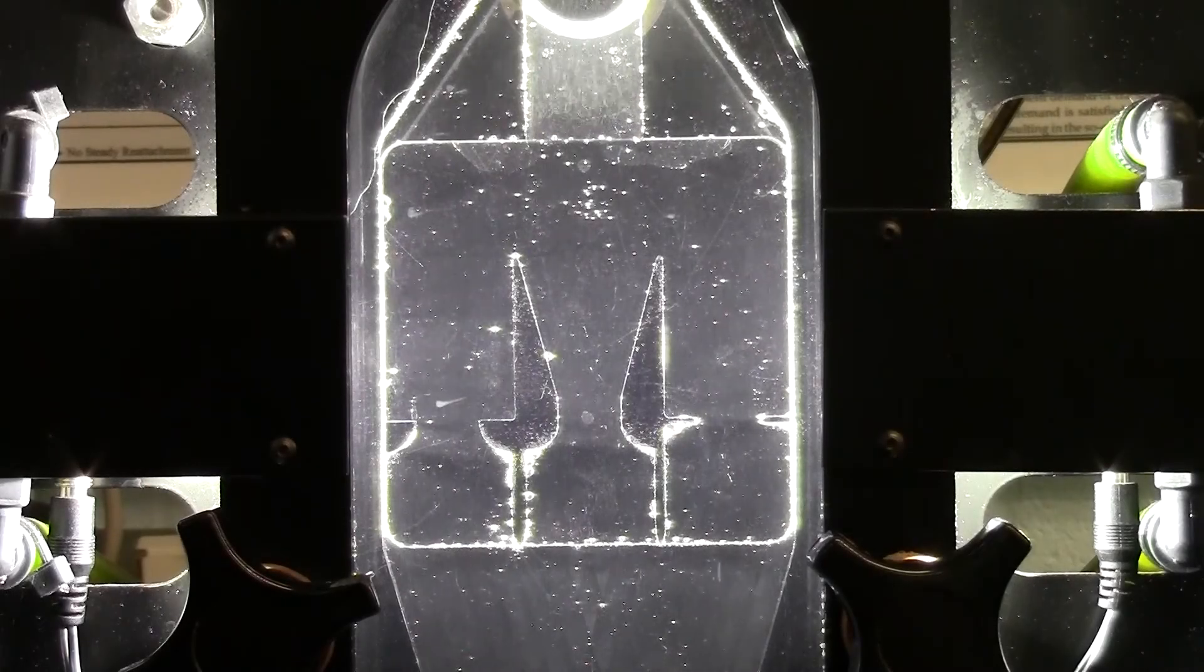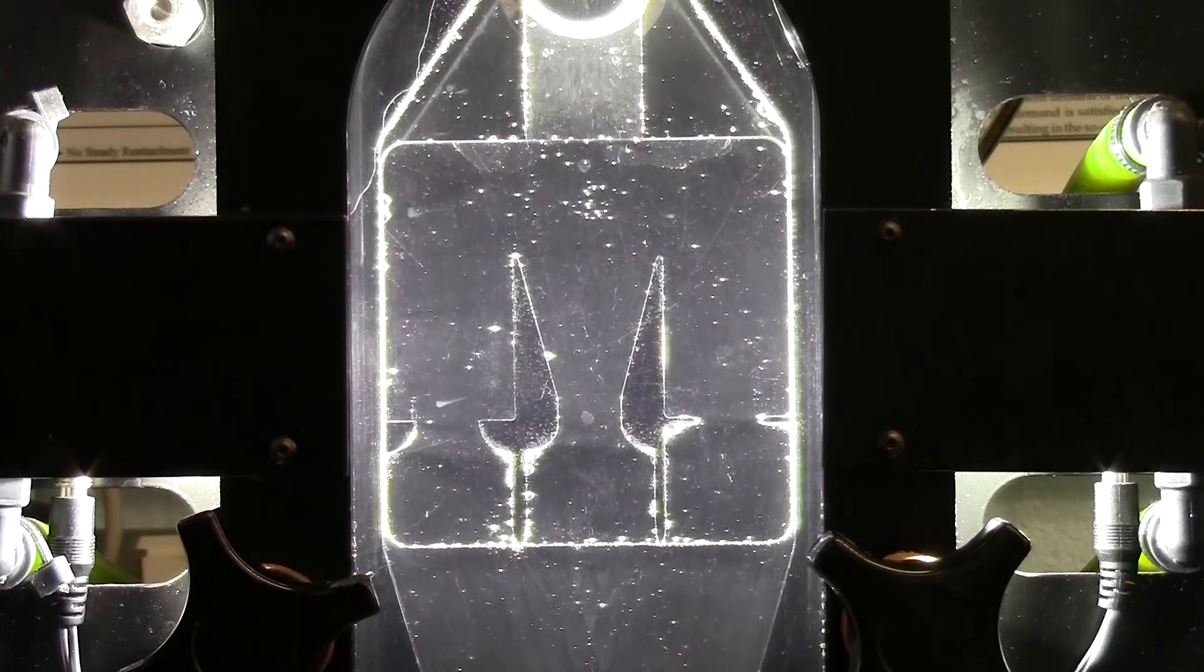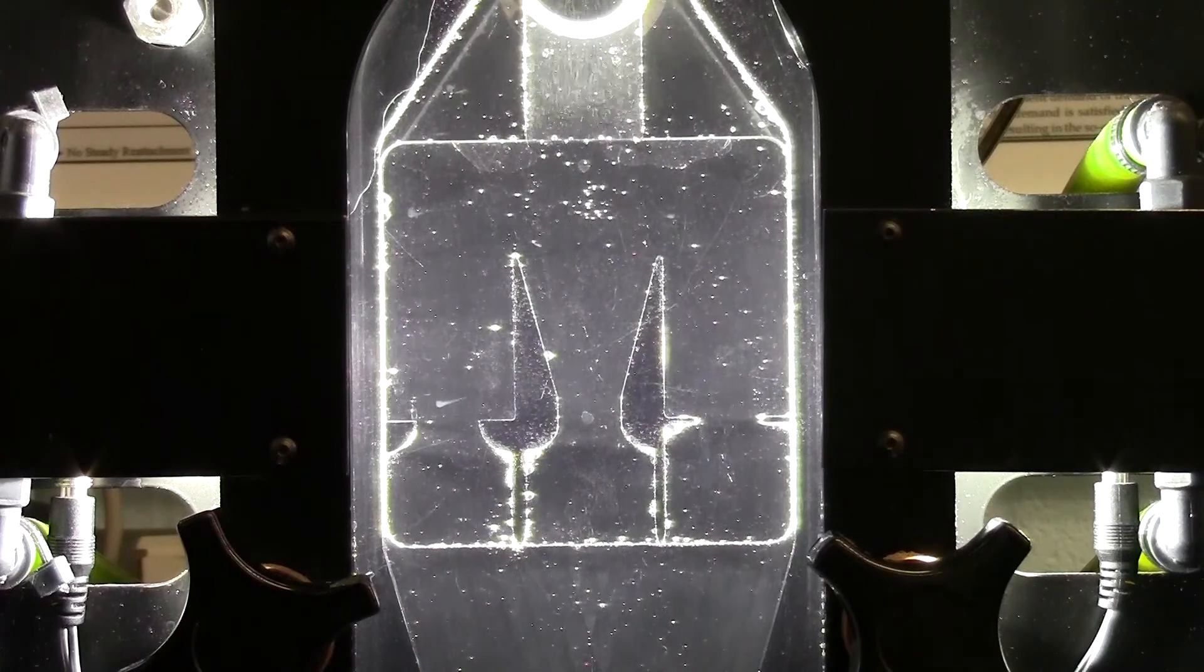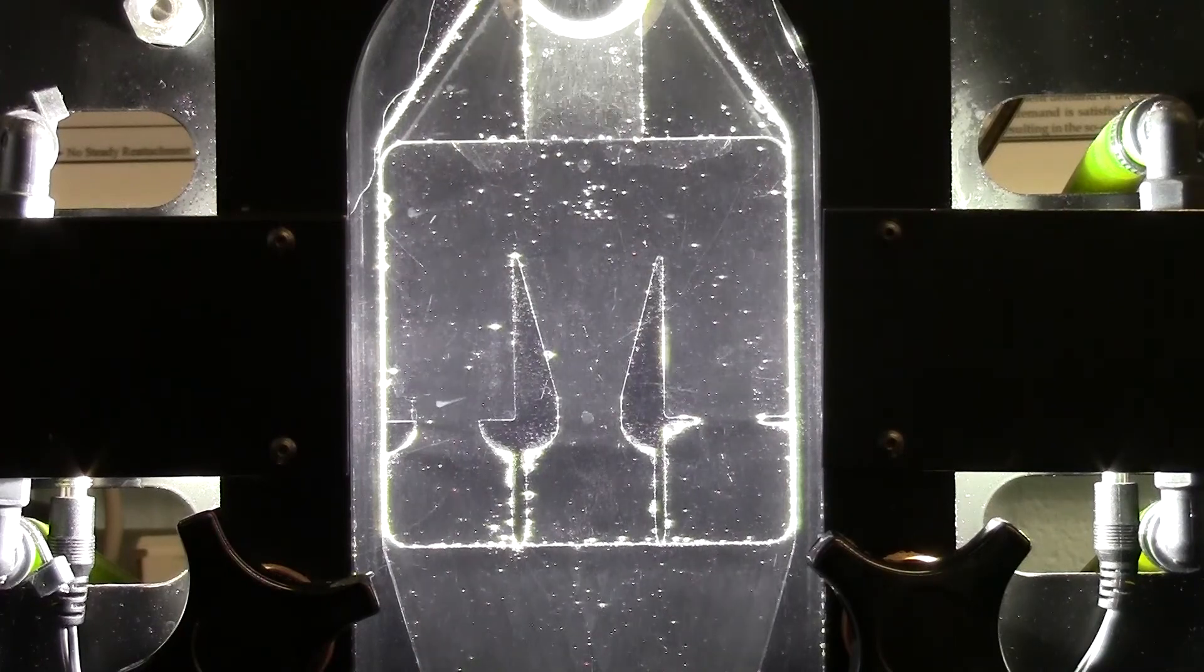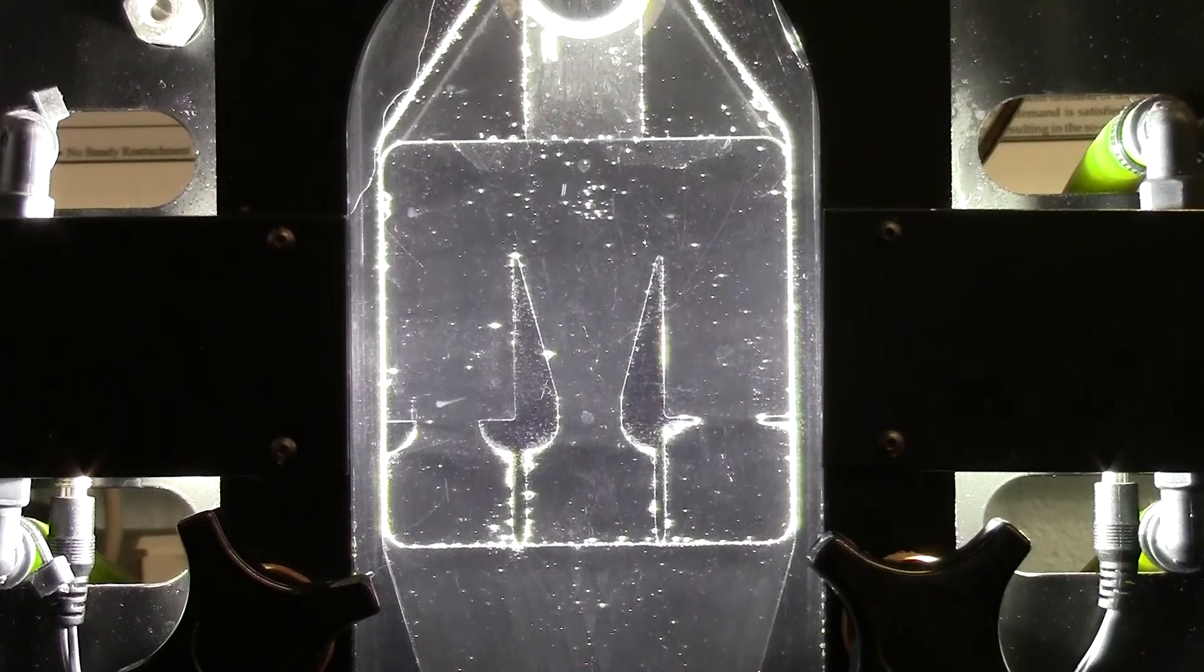We have the orifice comparison model inserted and we can use air bubbles to see the flow. Let me open the ventilation valve to produce some bubbles.